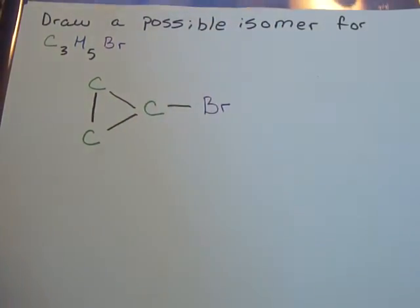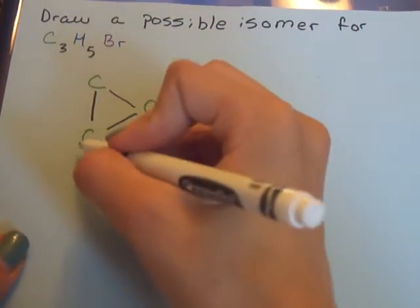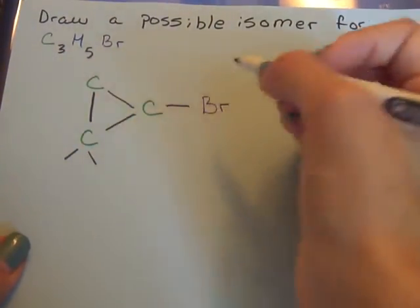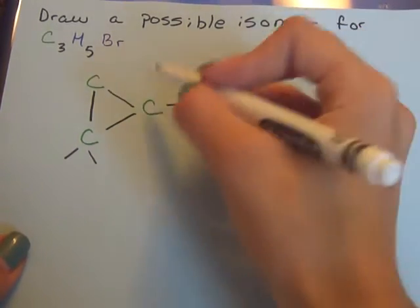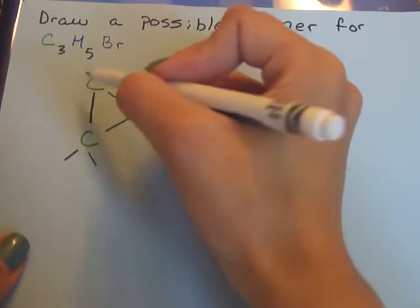And then of course the H's will go right here. So this is already bonded twice so we need two more. And this one has three so we need one more. And then this one also needs two more.